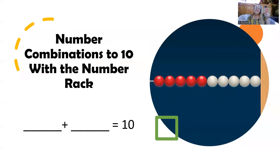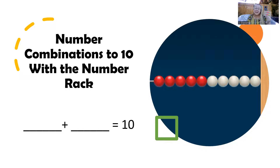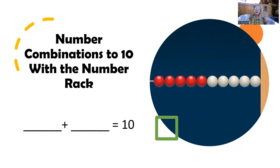Number combinations to 10 with the number rack. We can represent number combinations to 10 using an equation: blank plus blank equals 10. Let's see what combinations we can find today.